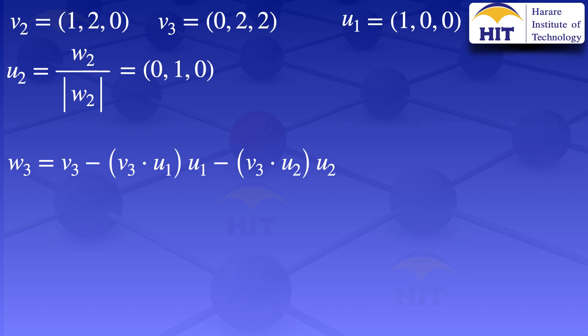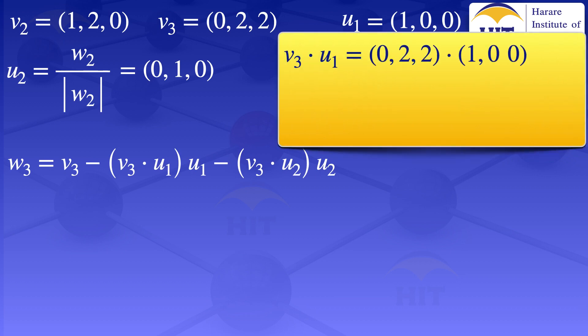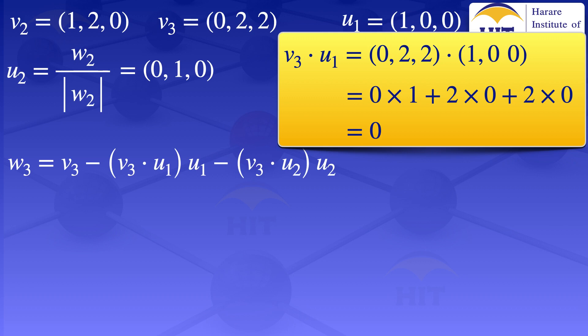To evaluate W3, I start by evaluating the inner product of V3 and U1. V3 is (0, 2, 2) and U1 is (1, 0, 0). The inner product is 0·1 + 2·0 + 2·0 = 0. Substituting into the formula for W3, this term becomes V3 minus 0·U1, so the U1 term drops out.